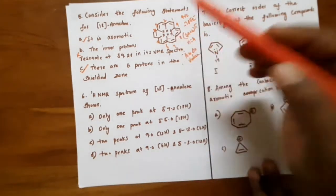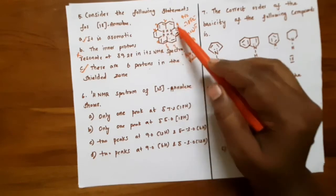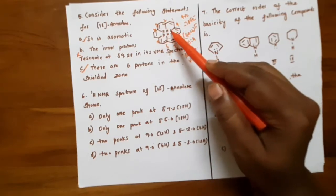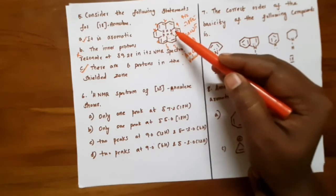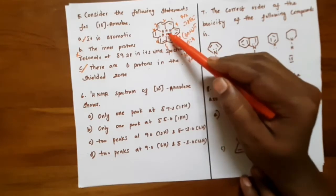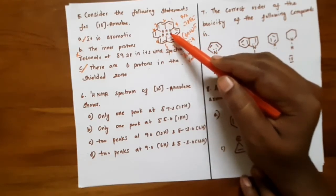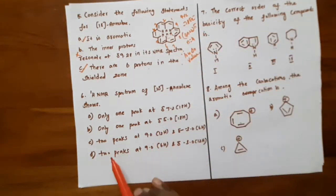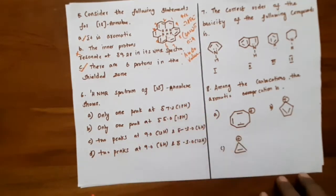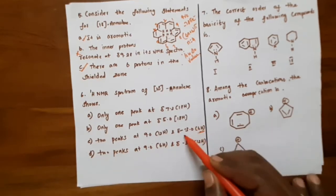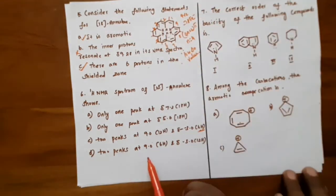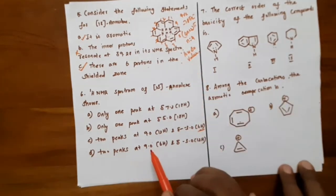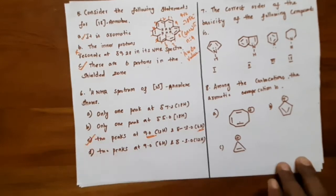As discussed, 18-annulene has 6 inner protons which are overcrowded. It is a diatropic molecule experiencing ring current. The electrons around the inner protons oppose the external magnetic field, so these inner protons resonate at low delta value — they are highly shielded and appear at minus 3.0. The 12 outer protons are in the deshielded zone with high delta value of 9.0. So option C is correct: two picks — 9.0 for 12 protons and minus 3.0 for 6 protons.